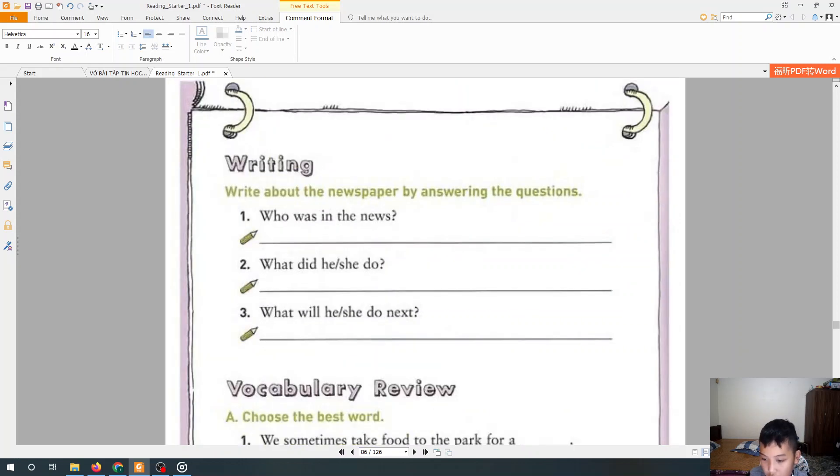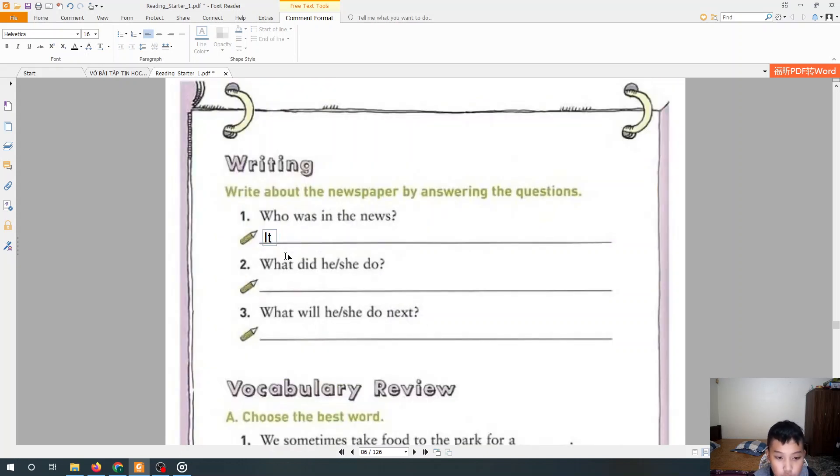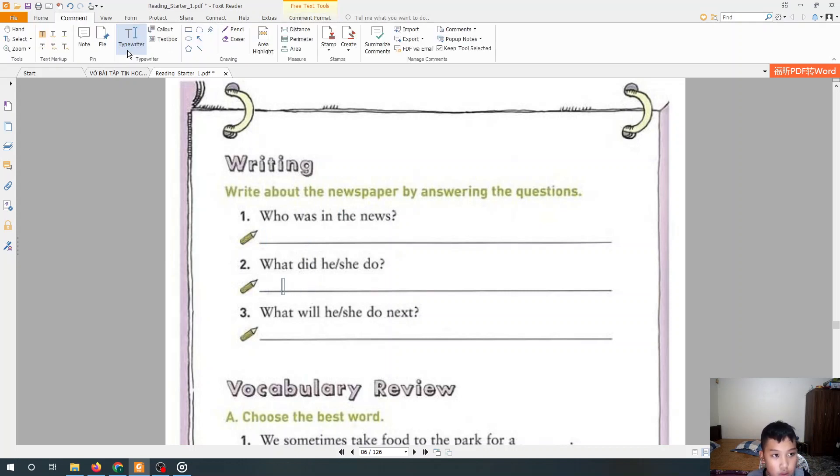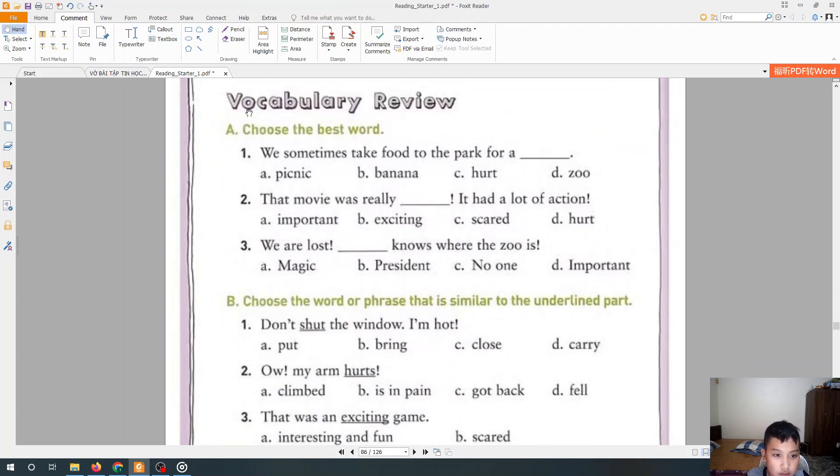We go to the writing activities. We will write about the newspaper by answering the question. Who was in the news? You have to do this homework by yourself in the book, Reading Starter 1. Let's go to the next. We will pass this exercise. You have to do this everyone, in the book. Next, we don't do it, it's in vocabulary review.